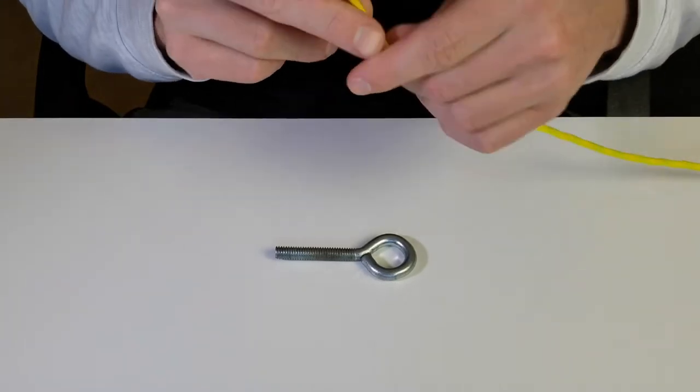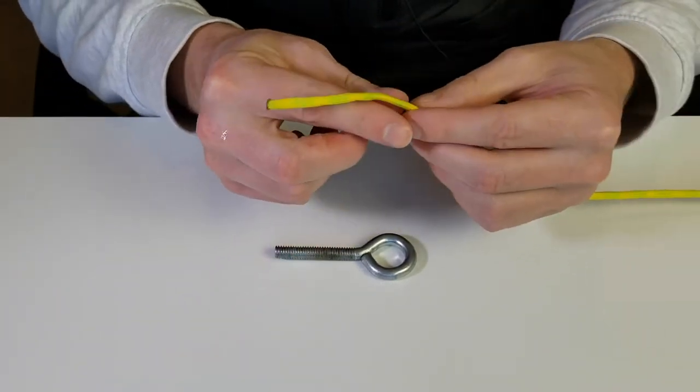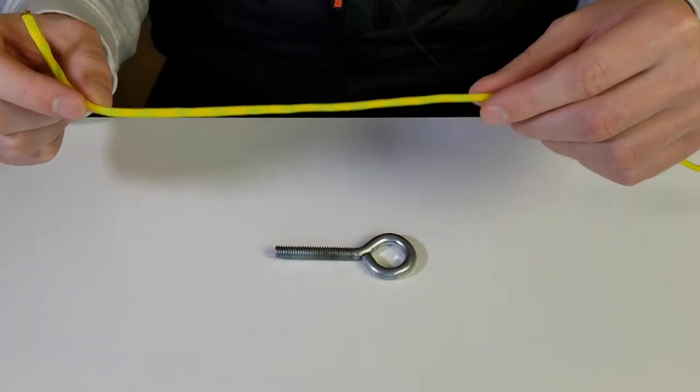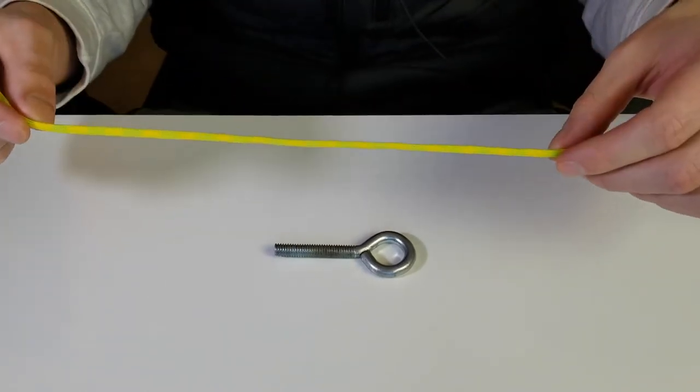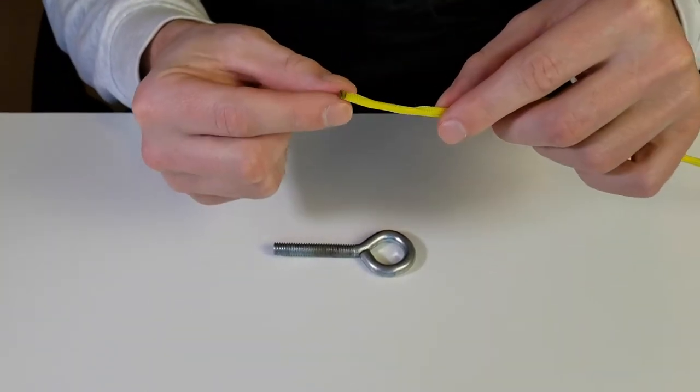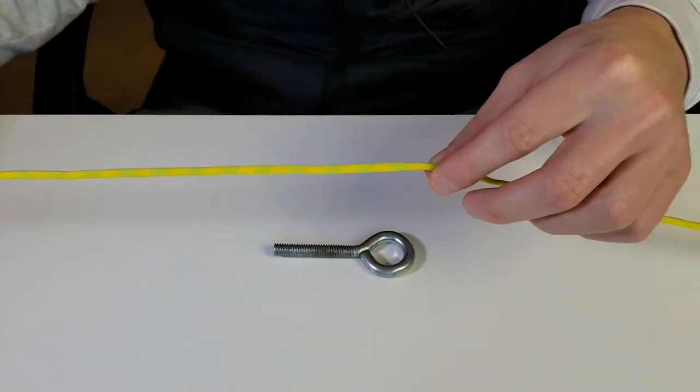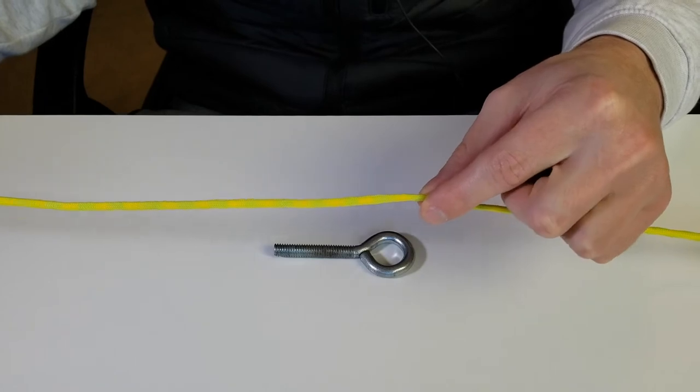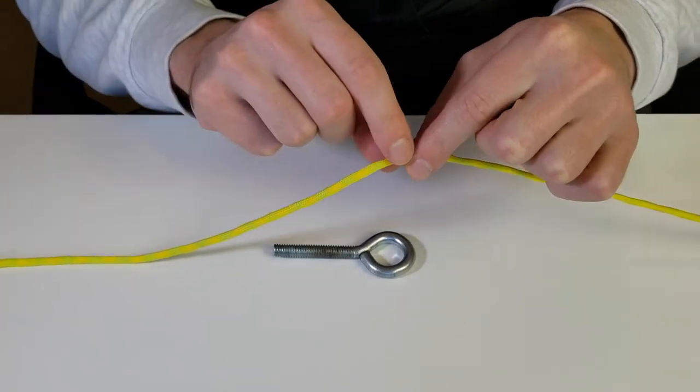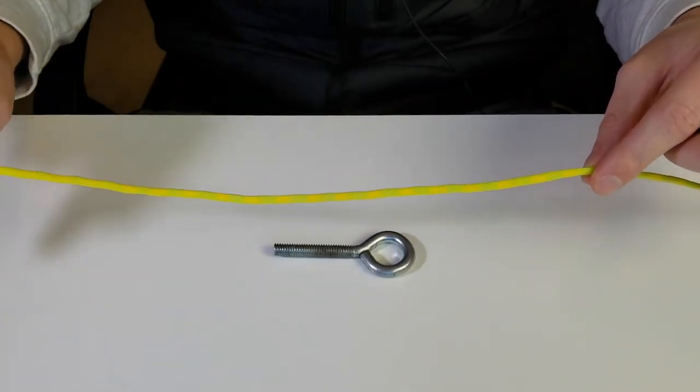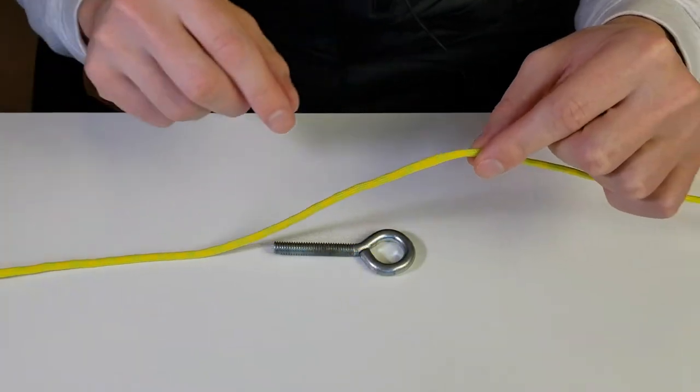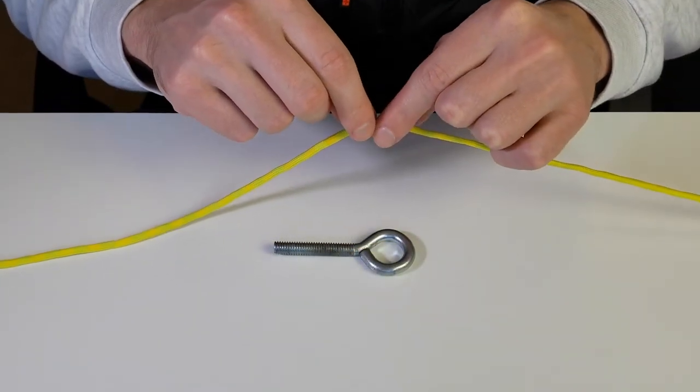You're going to take the tag end of your line and the very first step is to form a simple overhand knot. About 10 inches or so up the line is where you want to put your overhand knot. You want to get yourself enough tag end to work with so you can actually do the knot, and if it's your first time give yourself a little bit of extra room.